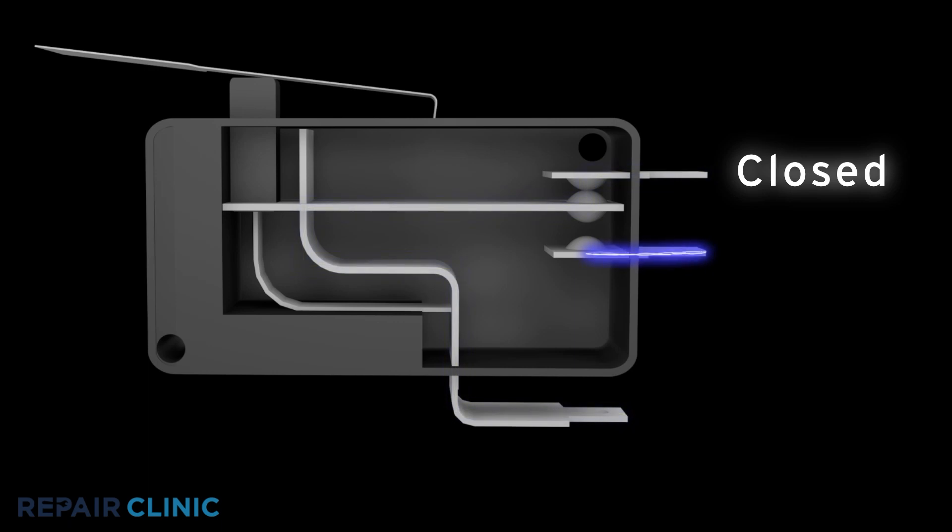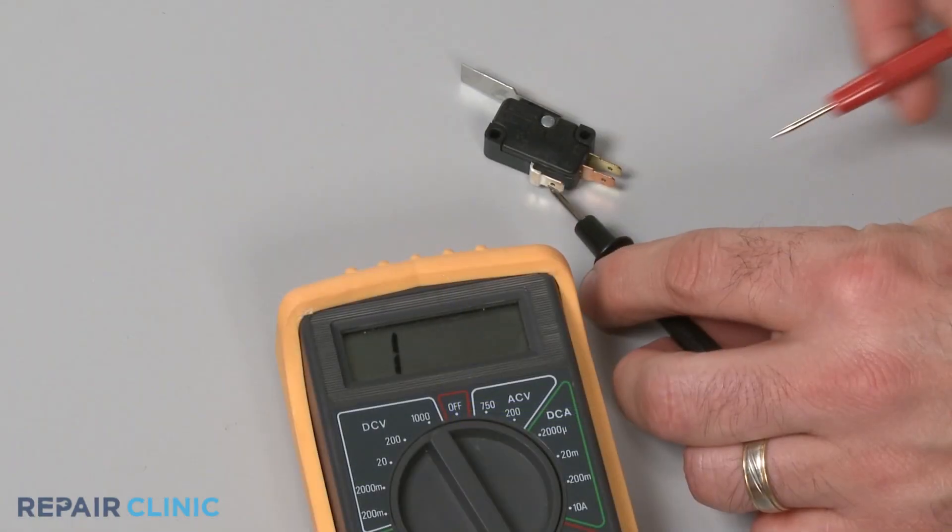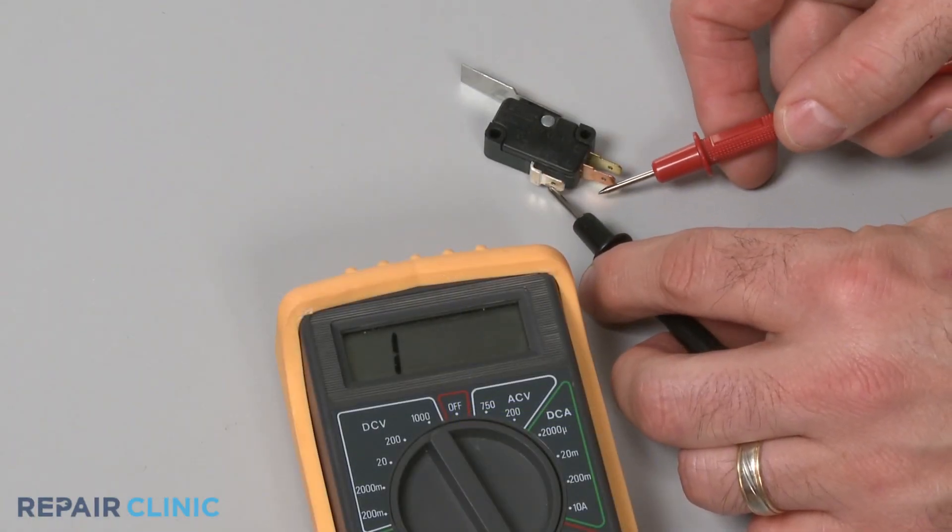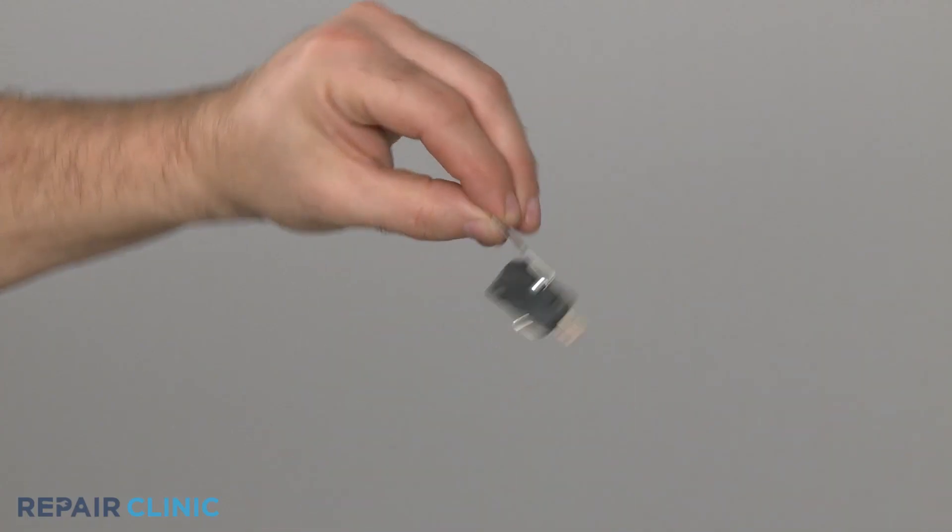Likewise, the normally open terminal should only provide continuity after the switch has been actuated. If a terminal tests positive for continuity when it should not, it's likely that the switch has shorted closed and will need to be replaced.